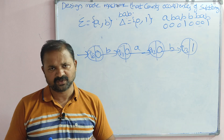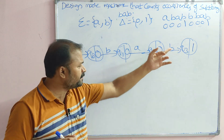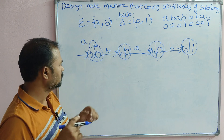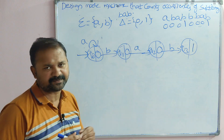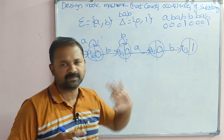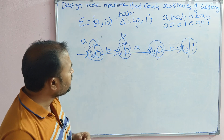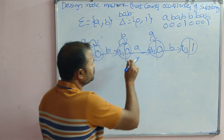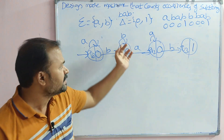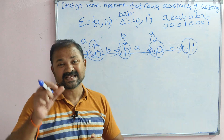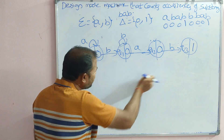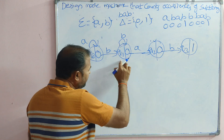On q0, only B is applied to move forward; applying A gives a self-loop because before BAB we can have any number of A's including zero. On q1, applying A moves to q2. For B on q1, we can apply a self-loop — BAB can still follow. On q2, applying A: we cannot use a self-loop because AAB would also be accepted, but the substring is BAB, so we backtrack to q1.